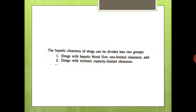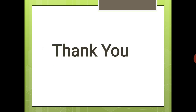To summarize: we learned the definition and unit of clearance, the total body clearance equation, organ clearance, extraction ratio, renal clearance and renal clearance ratio, hepatic clearance, and the two factors affecting hepatic clearance — blood flow rate-limited and intrinsic capacity-limited. Please go through and learn properly. Thank you.